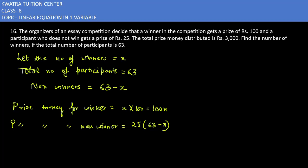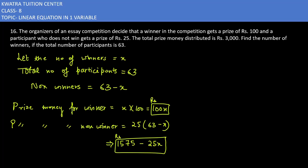If you multiply 25 by (63 minus x), you get 25 times 63 which is 1575, and 25 times x. So the total equation is: 100x plus 1575 minus 25x is equal to 3000.